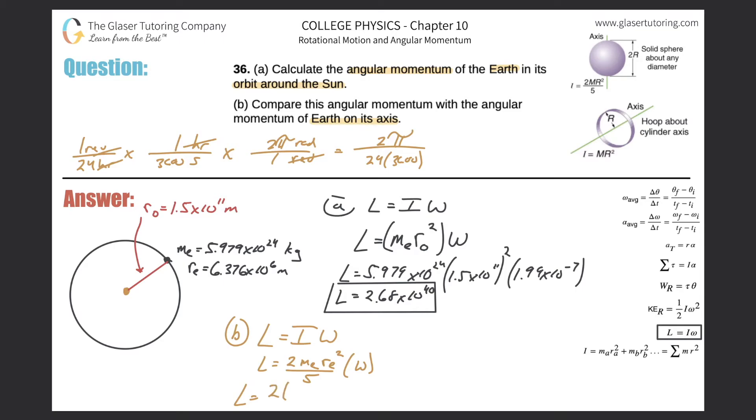I'm just going to plug it into my formula, all the information. So now it's 2 multiplied by the mass of the earth, 5.979 times 10 to the 24th, multiplied by the radius of the earth squared, 6.376 times 10 to the 6th squared, divide this whole part by 5, multiply that by your angular velocity of 2 pi all over 24 times 3,600.